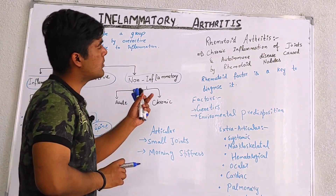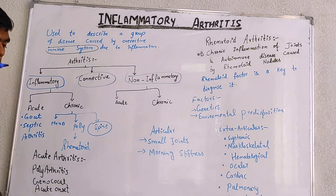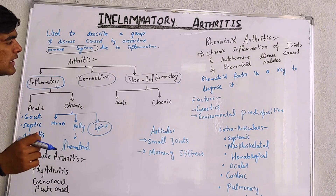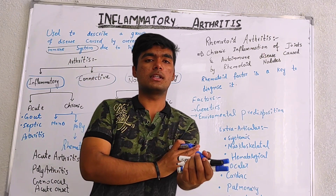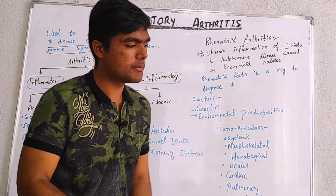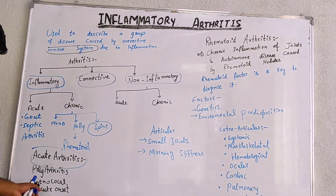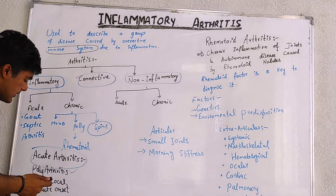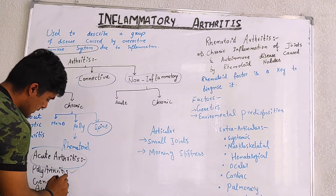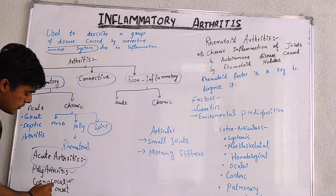When we talk about the details of these arthritis types one by one — what is Acute, what is Chronic, what are the causative factors, and at which areas of our body it is going to develop — the first type is Acute Arthritis. It is basically Poly Arthritis that can affect more than one place; it is gonococcal, genetic, and has an acute onset.